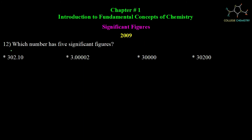Question number 12: which number has 5 significant figures? Four options are given. We consider each option left to right from the first non-zero digit, counting significant figures. The correct answer is 302.10, which has 5 significant figures.